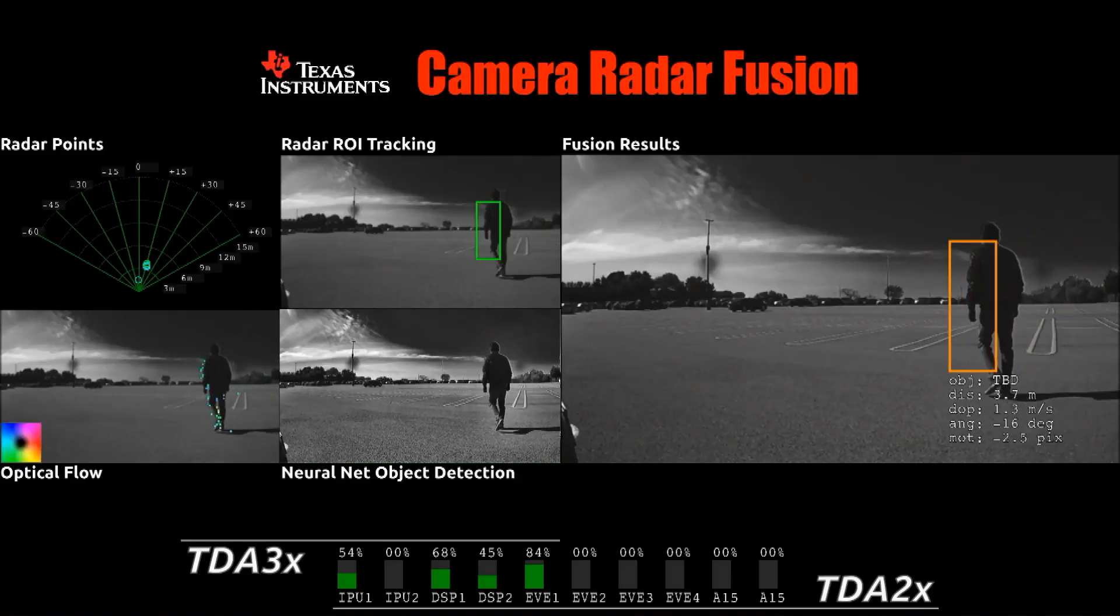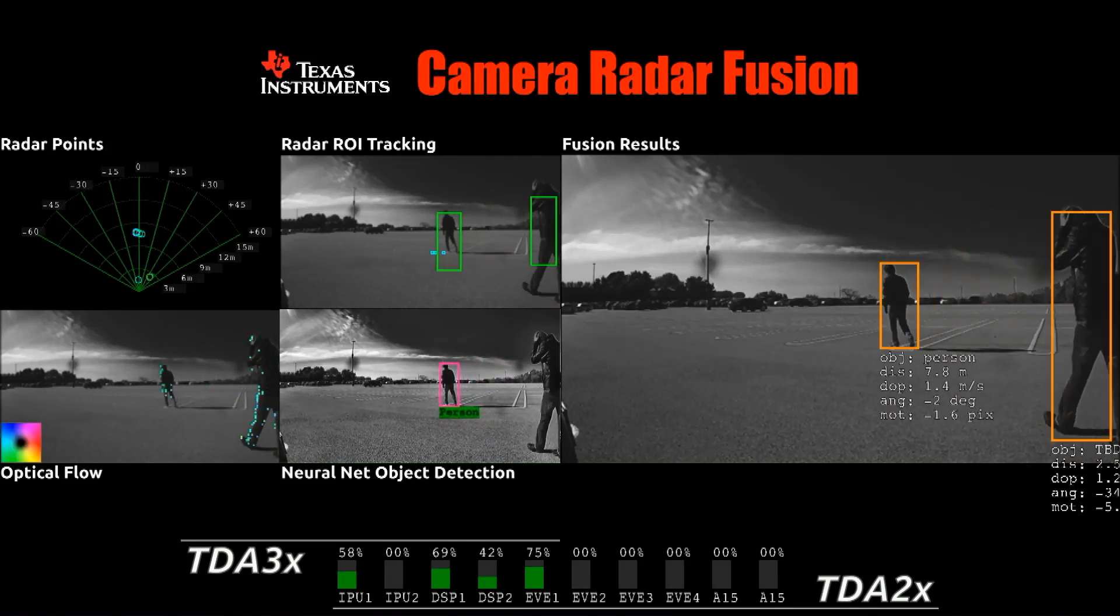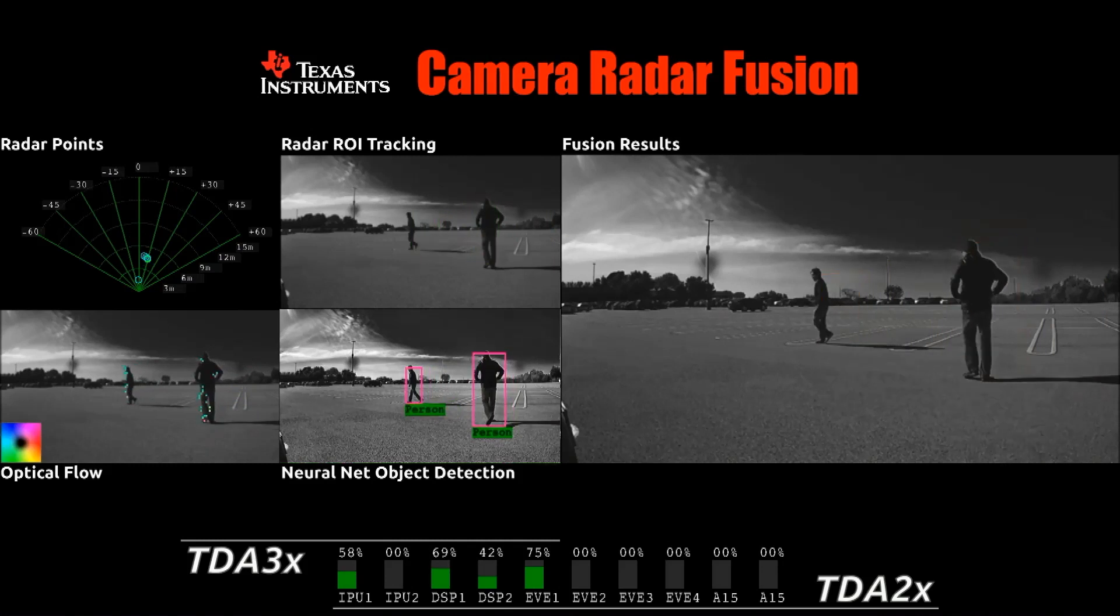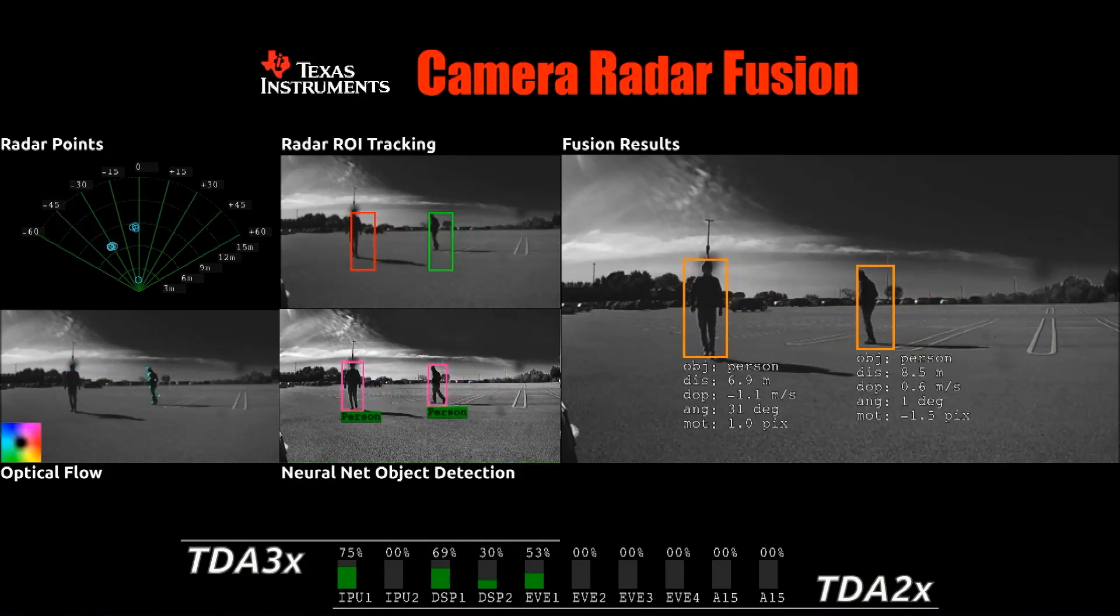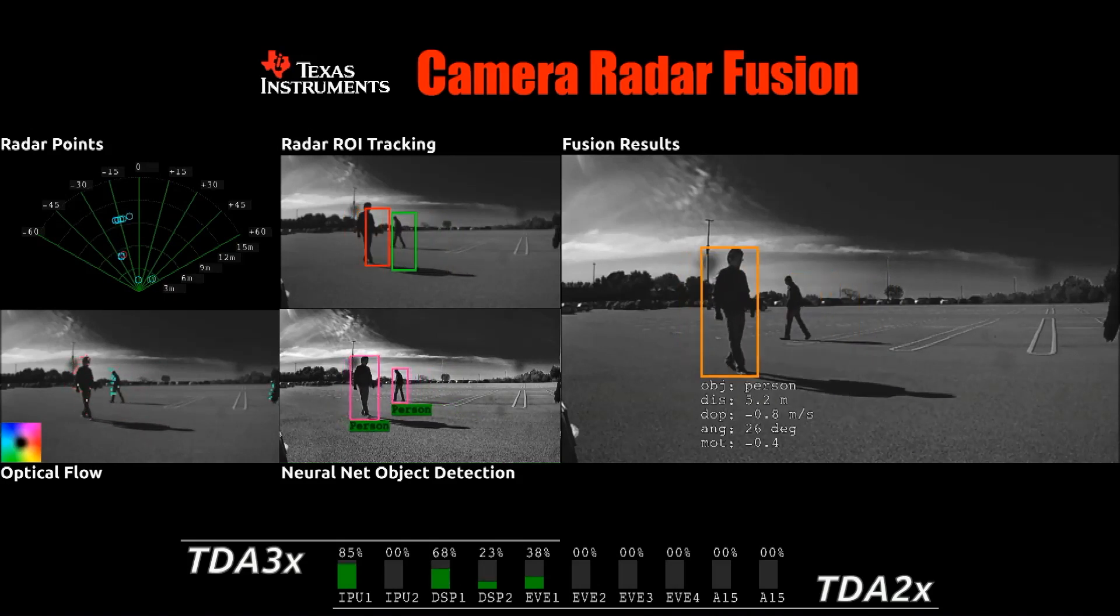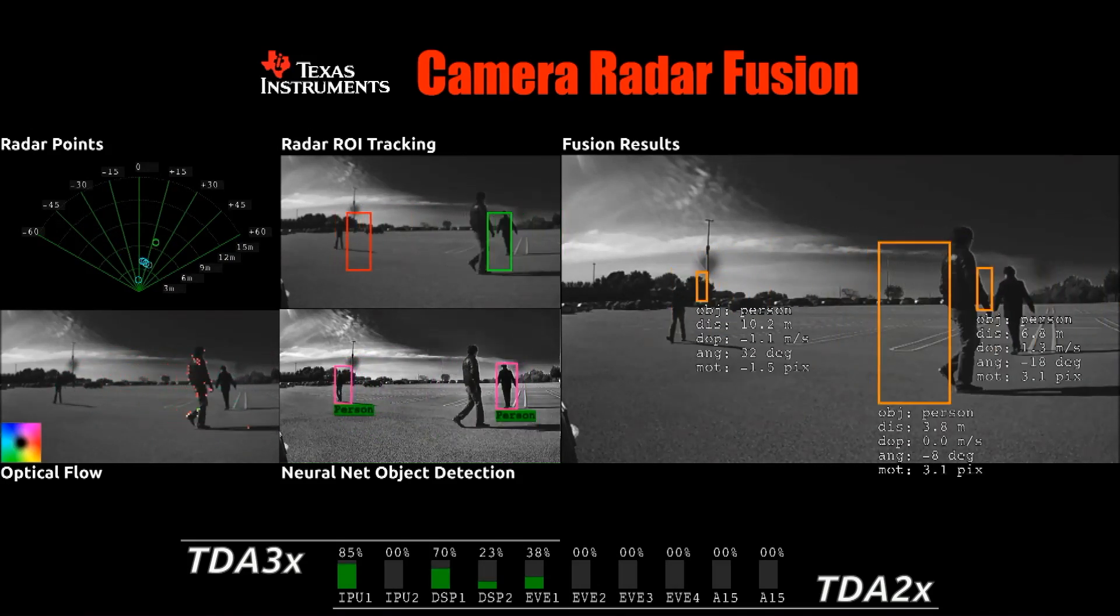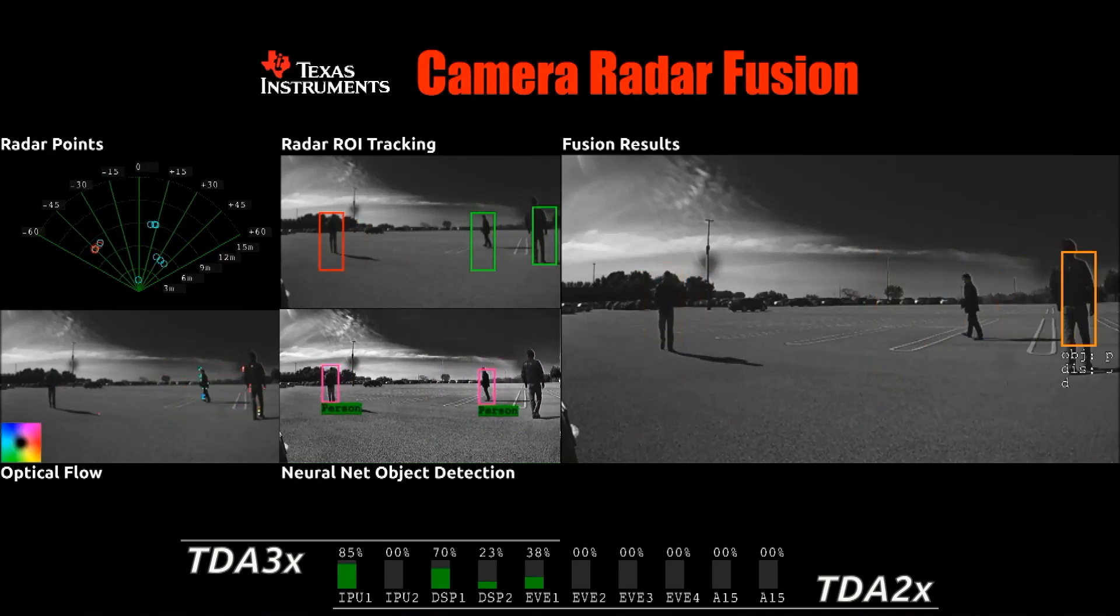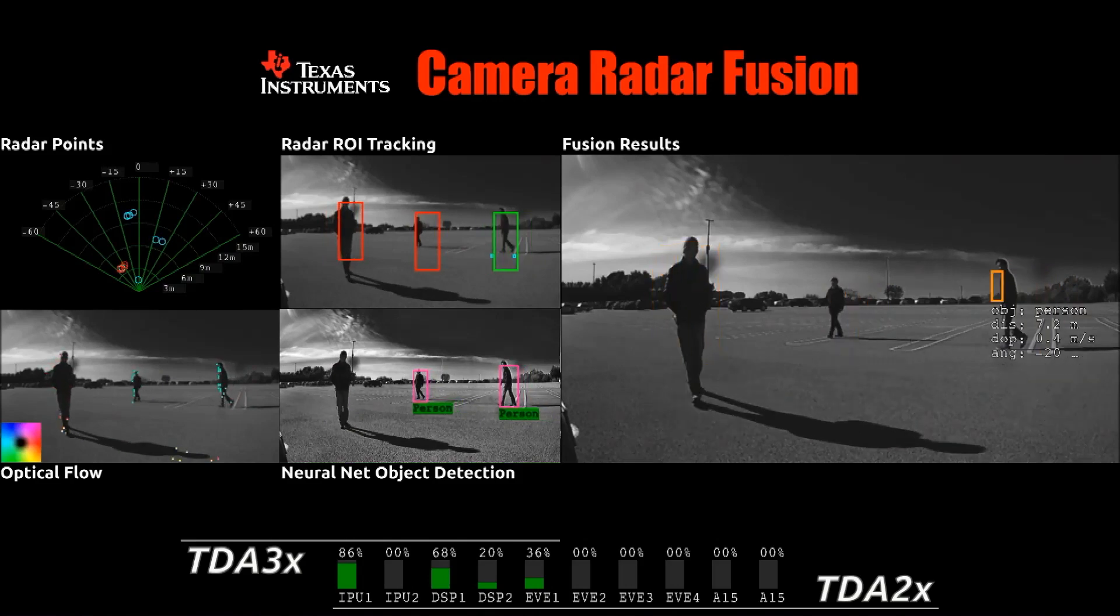This is the second real-time demo video. The test scene is very similar to the previous one. Now the data is processed on a TI TDA3 SOC processor in real-time, and the detected points and cluster results are sent to the PC for visualization. We can see that both pedestrian and cars can be detected and clustered with reasonably high accuracy.